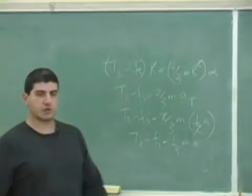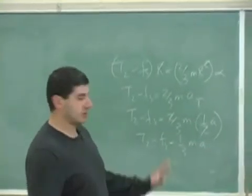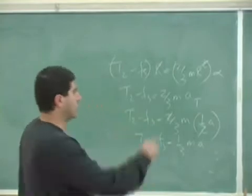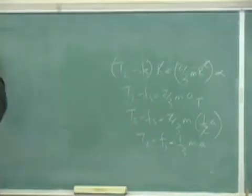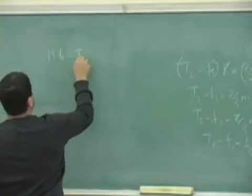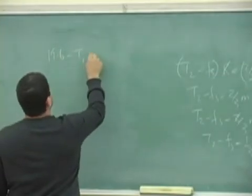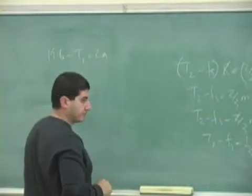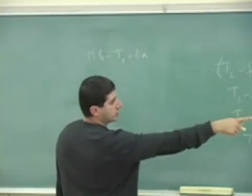So here are all the equations together. Equation one: 19.6 minus T1 equals 2A. Equation two for the pulley: T1 minus T2 equals one-half A.